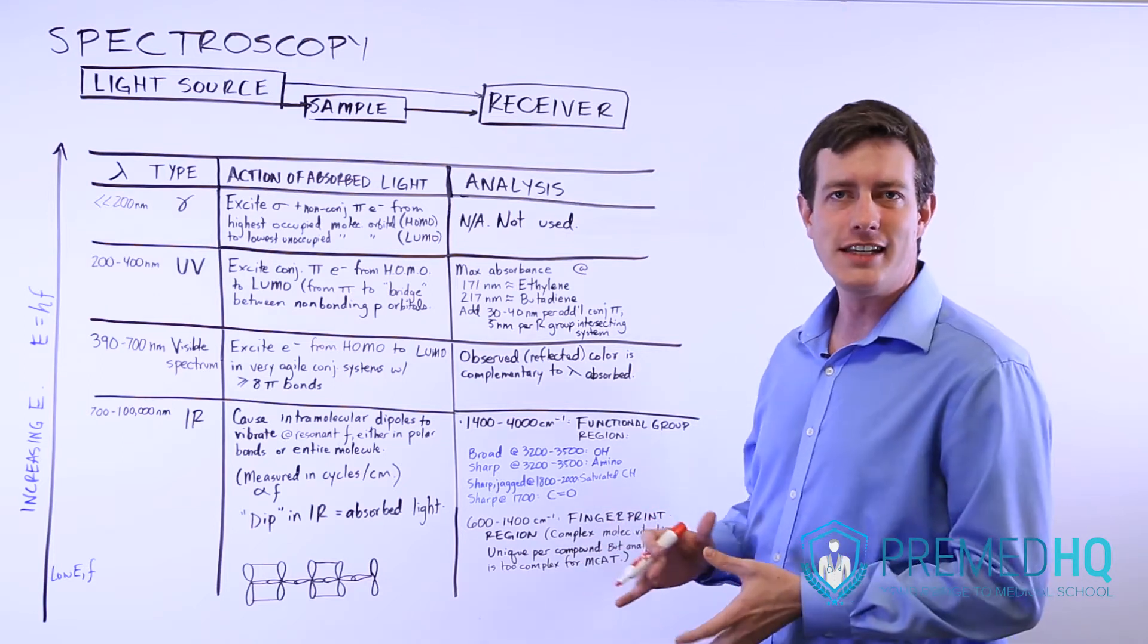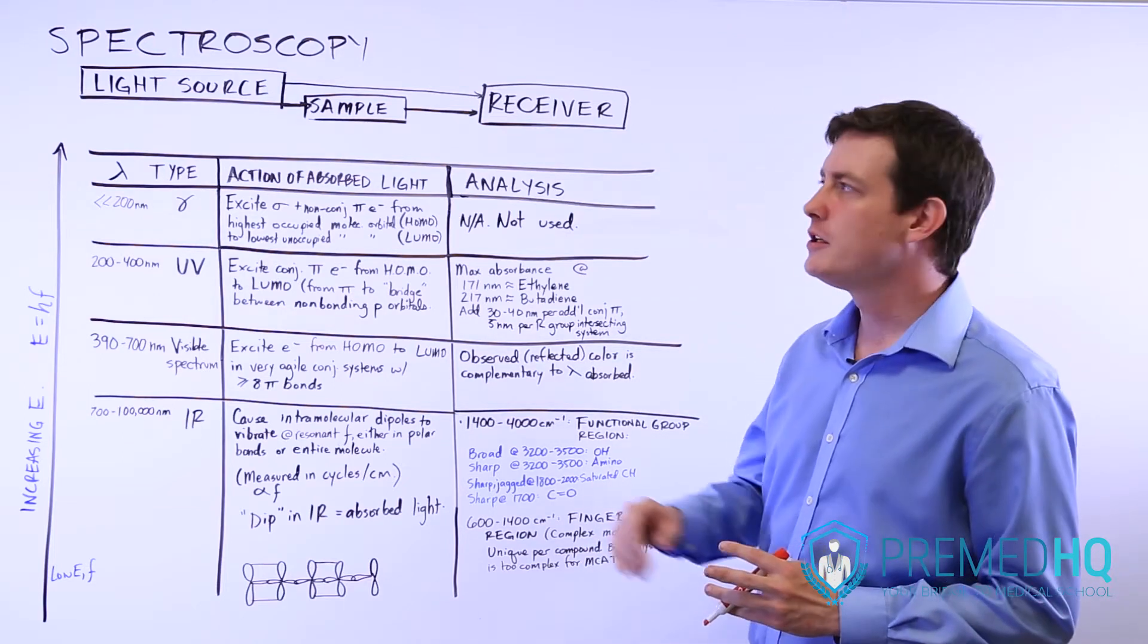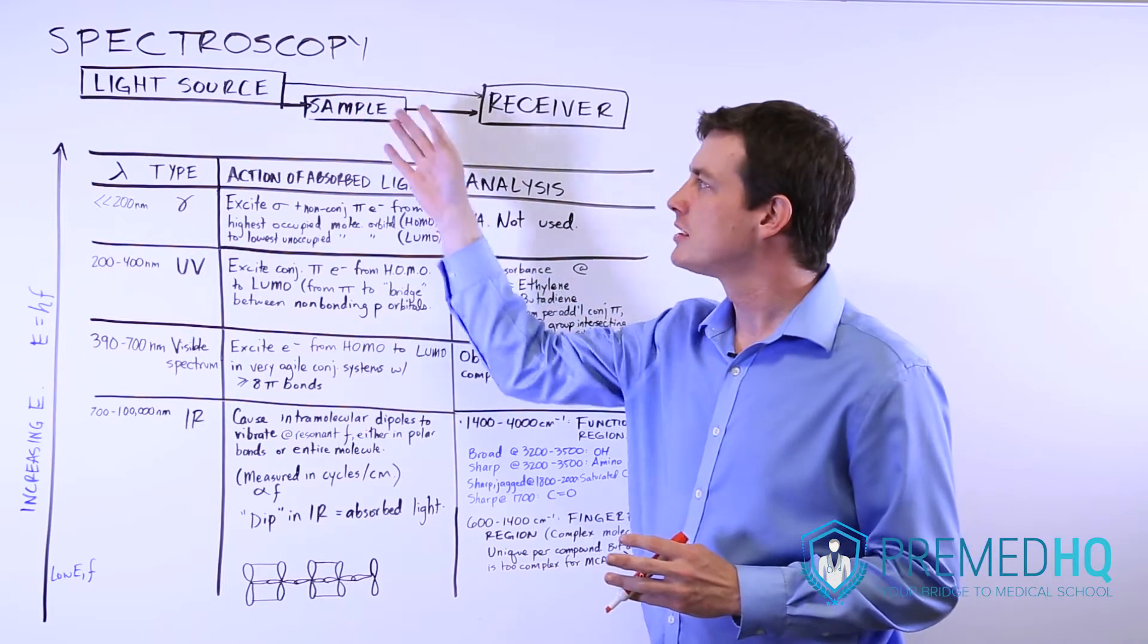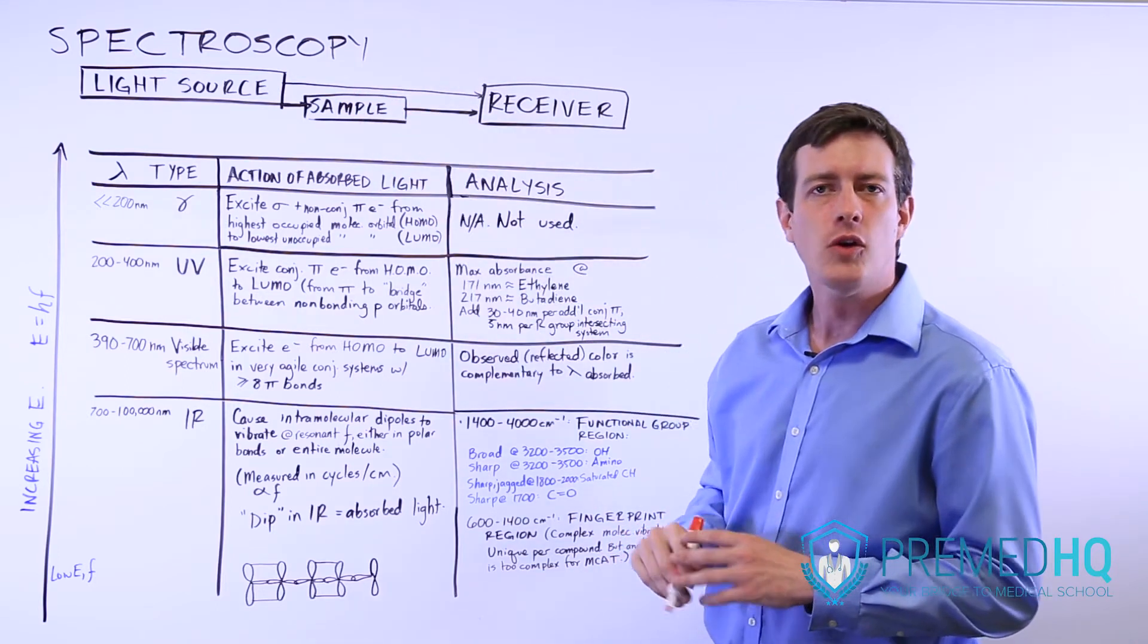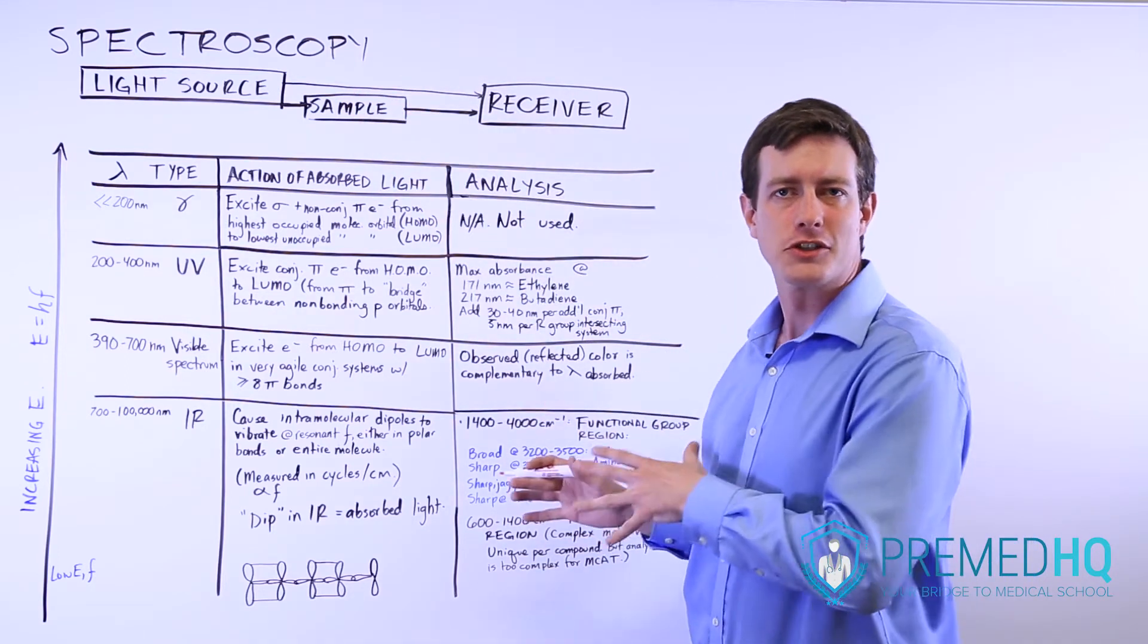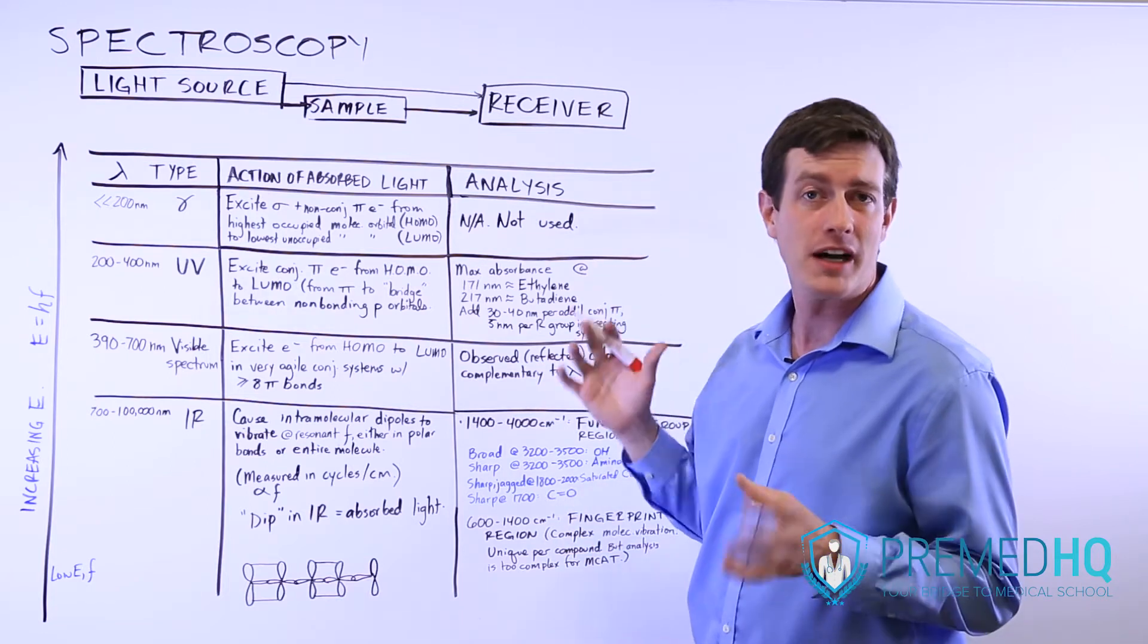Spectroscopy is an analytical technique used in organic chemistry where you use light and the absorption of light in order to figure out what compounds or functional groups are present in some unknown sample.